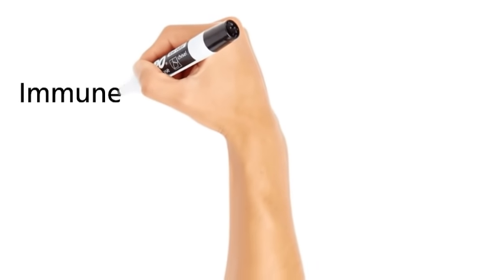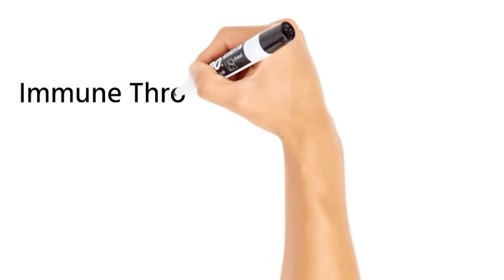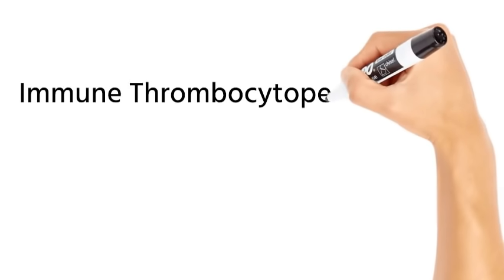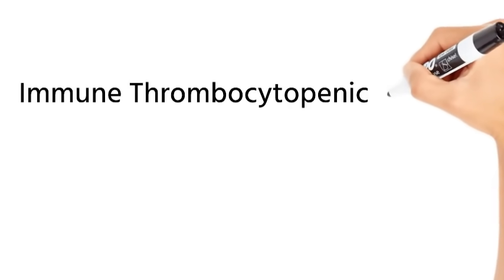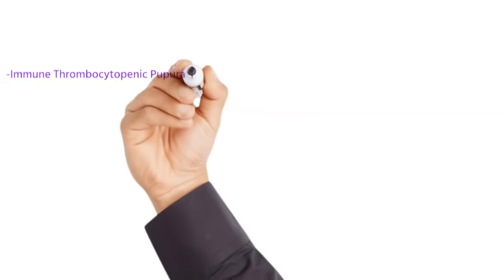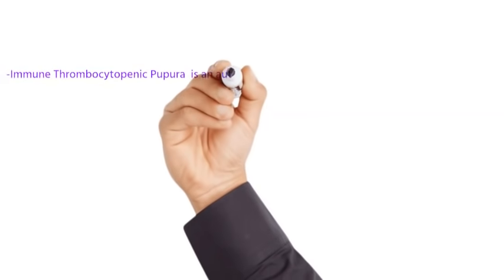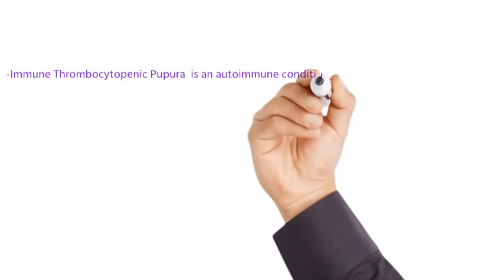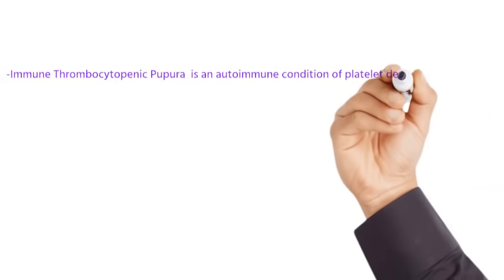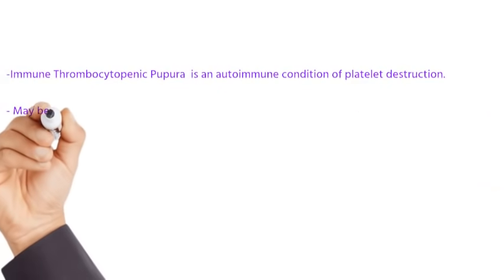Hello everyone, today we will be discussing briefly about immune thrombocytopenic purpura. ITP is an autoimmune condition in which we get destruction of the platelets.